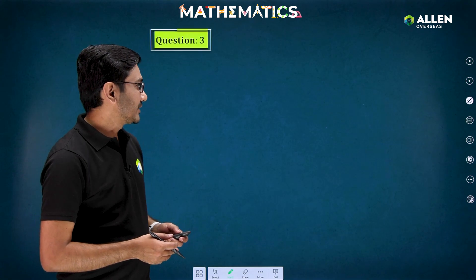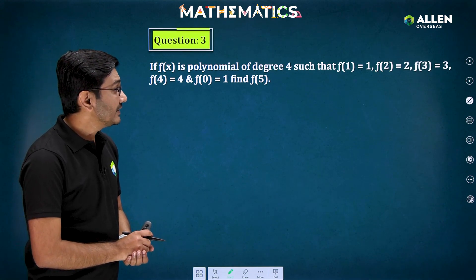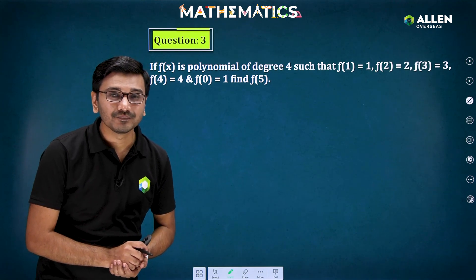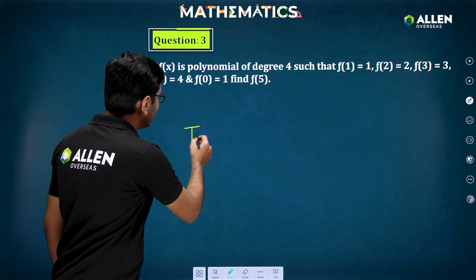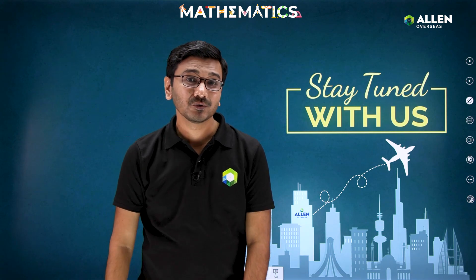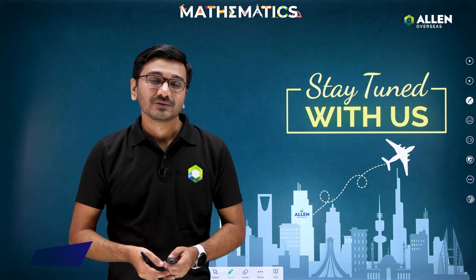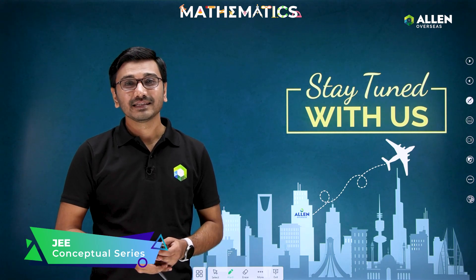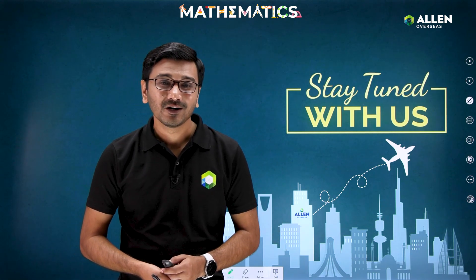Now let's have a look at the homework question. f(x) is a polynomial of degree 4 such that f(1) = 1, f(2) = 2, f(3) = 3, f(4) = 4, and f(0) = 1. You need to find f(5). Note that here it is not given that f(x) is a monic polynomial, so try this yourself. Don't forget to give your answers in the comment box. Stay tuned with Alan Overseas for more such videos. Thank you.